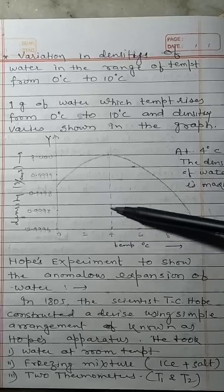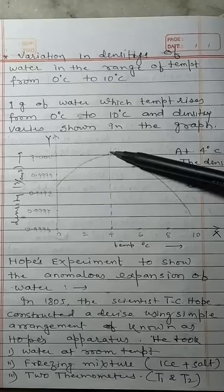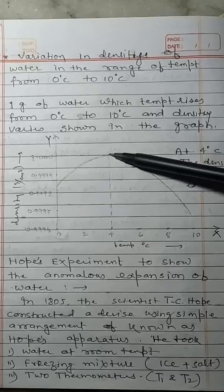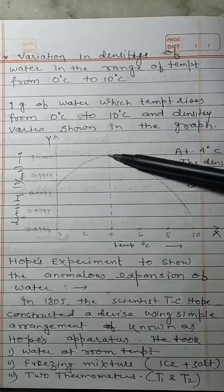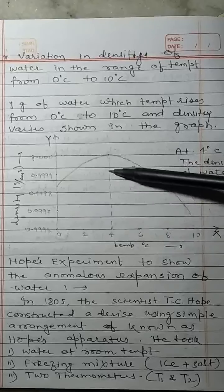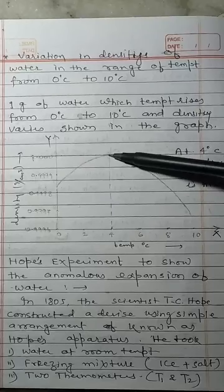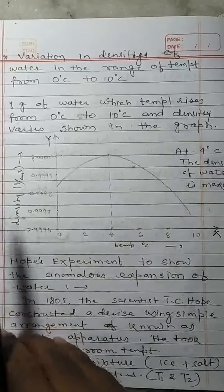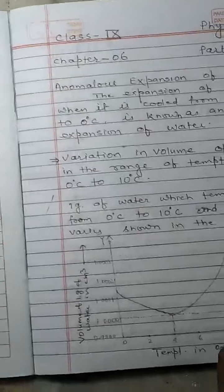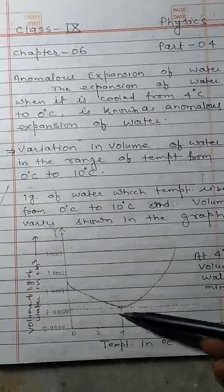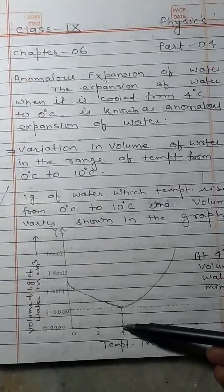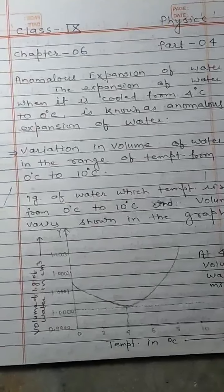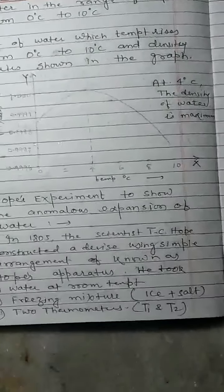So at 4°C, density of water is maximum, and volume of water is minimum.